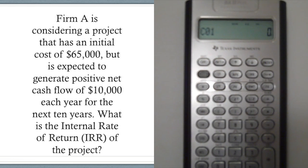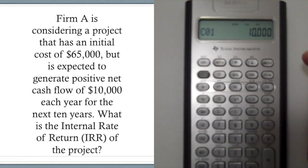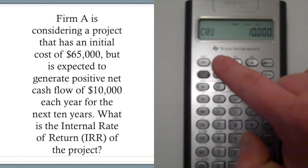In our case, we know that the project will generate $10,000 each year for the next 10 years, so we're going to go ahead and put in $10,000. And that's positive because it's generating positive net cash flow. And to lock it in, we'll just press enter.